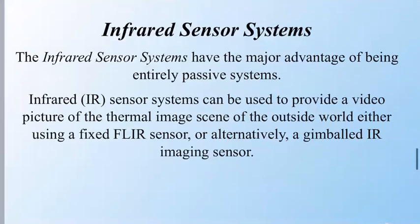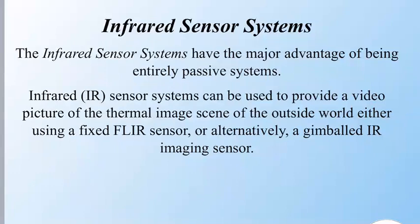Next, we will talk about infrared sensor systems. These have the major advantage of being entirely passive systems. They can be used to provide a video picture of the thermal image of the outside world, using either a fixed FLIR sensor or an alternative gimbal IR imaging sensor.